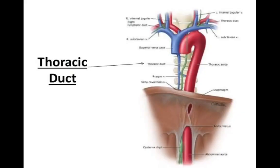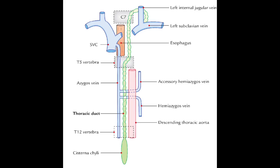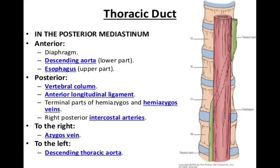At the aortic opening, the diaphragm has three major openings: the aortic opening at T12, the vena caval opening, and the esophageal opening. The relations of the thoracic duct at the aortic opening are: in front it is related to the median arcuate ligament, behind to the twelfth thoracic vertebra, to the right to the azygos vein, and to the left to the aorta.